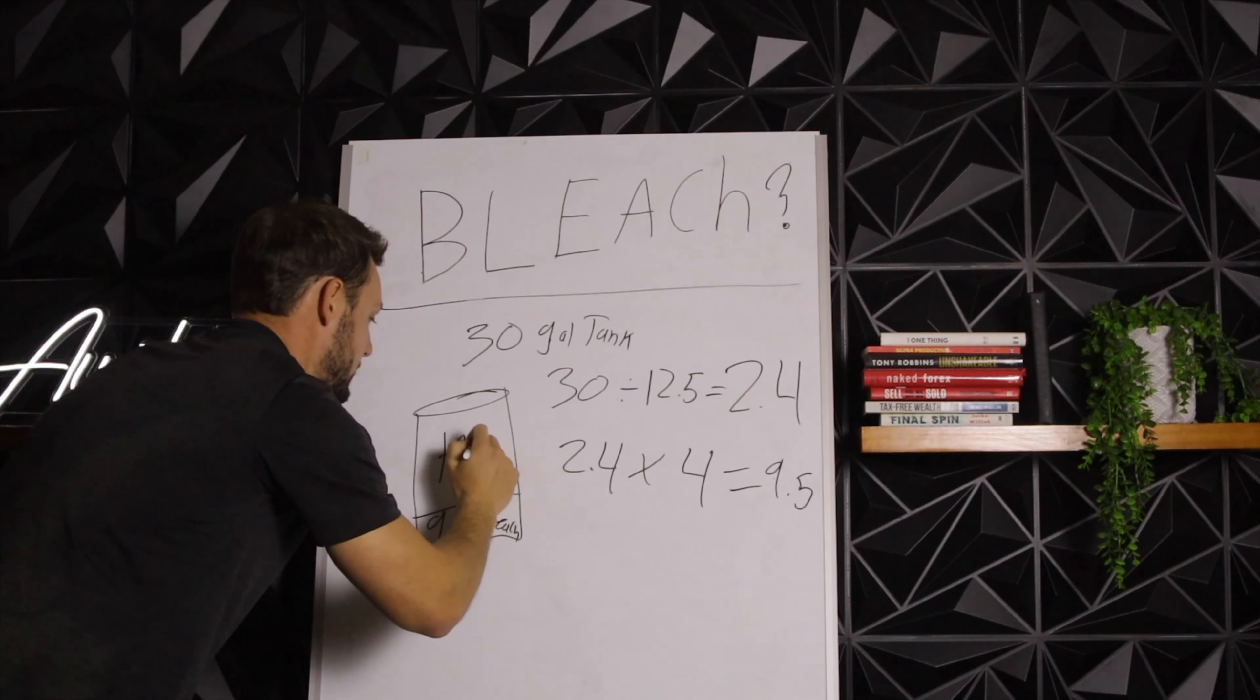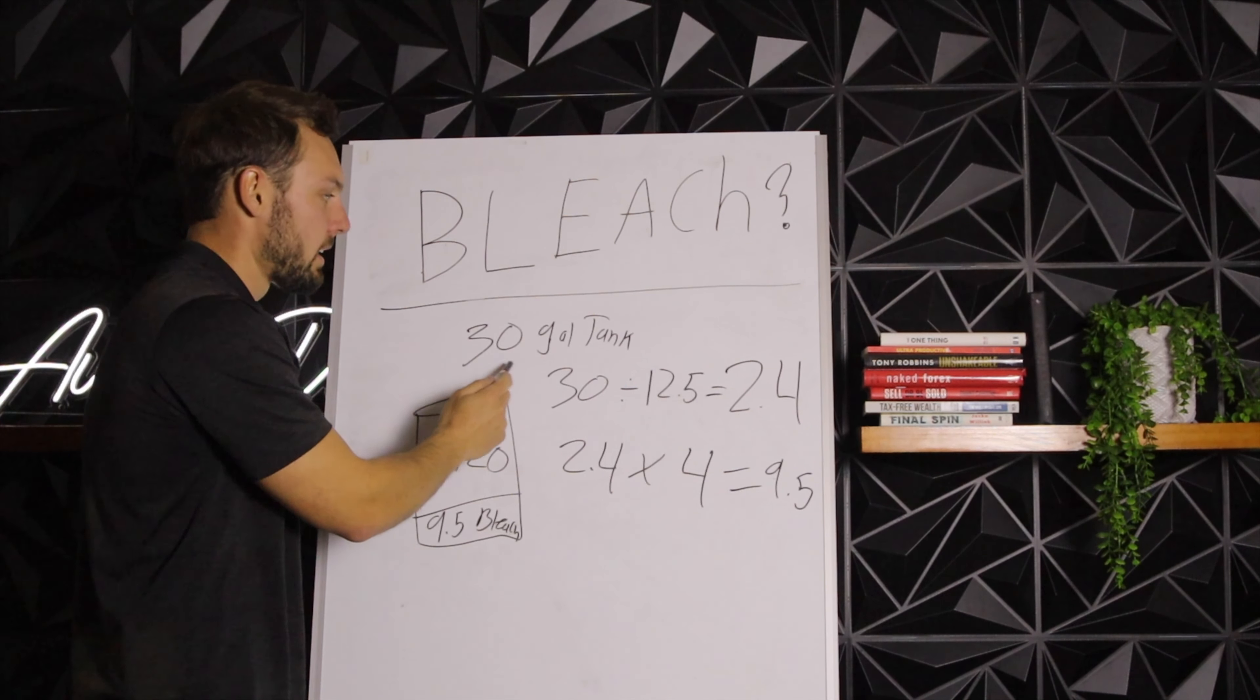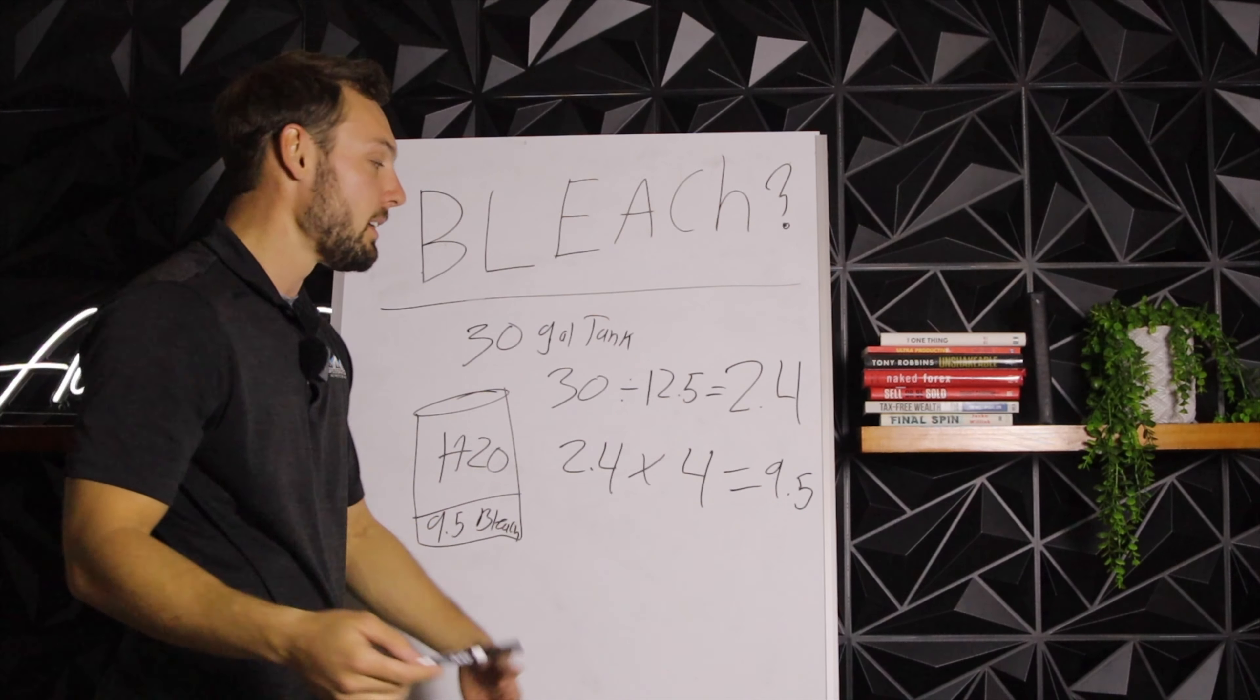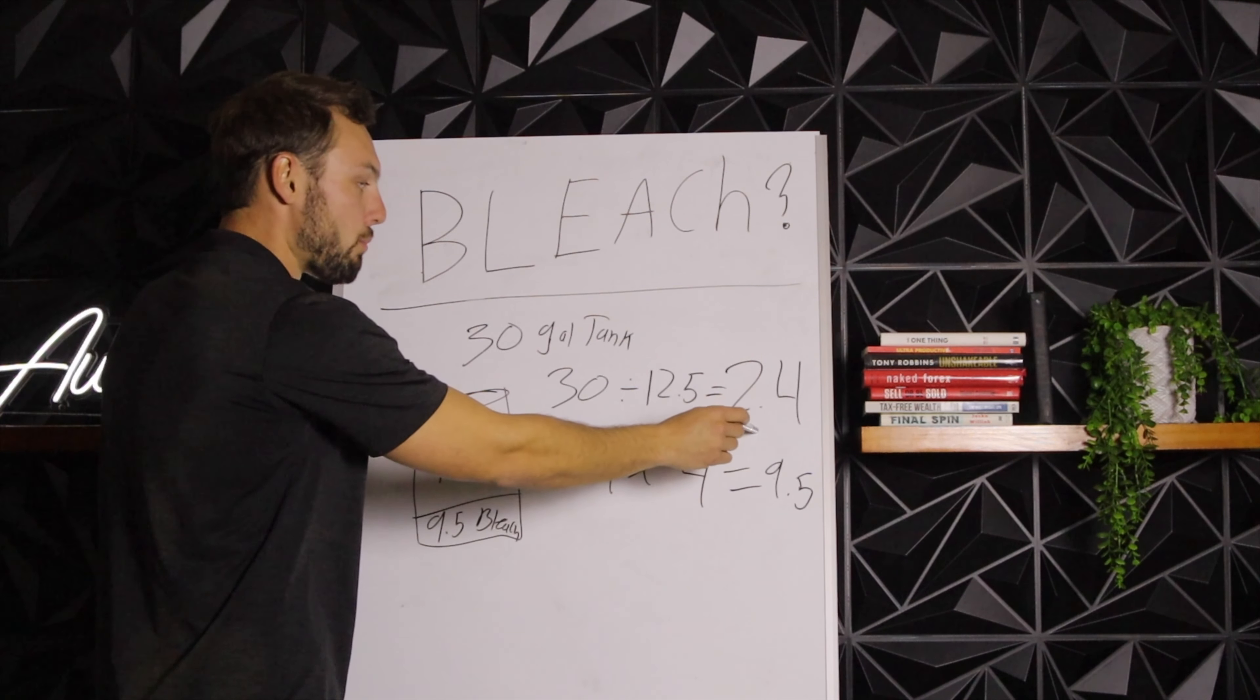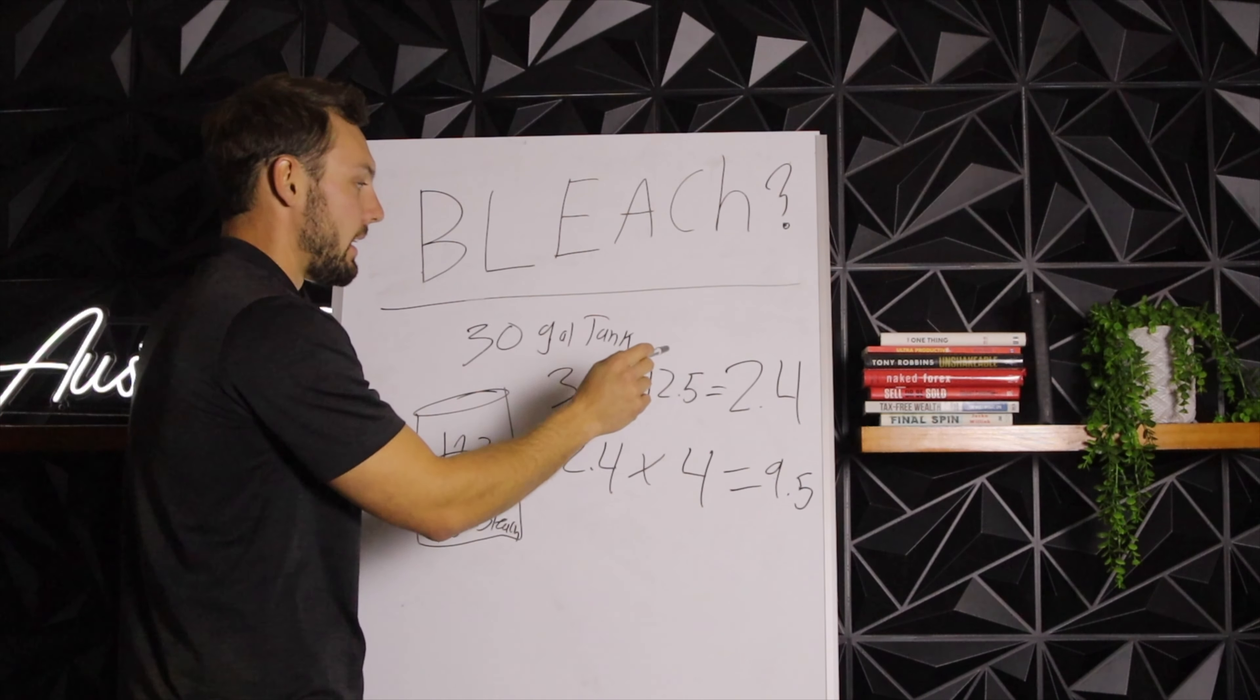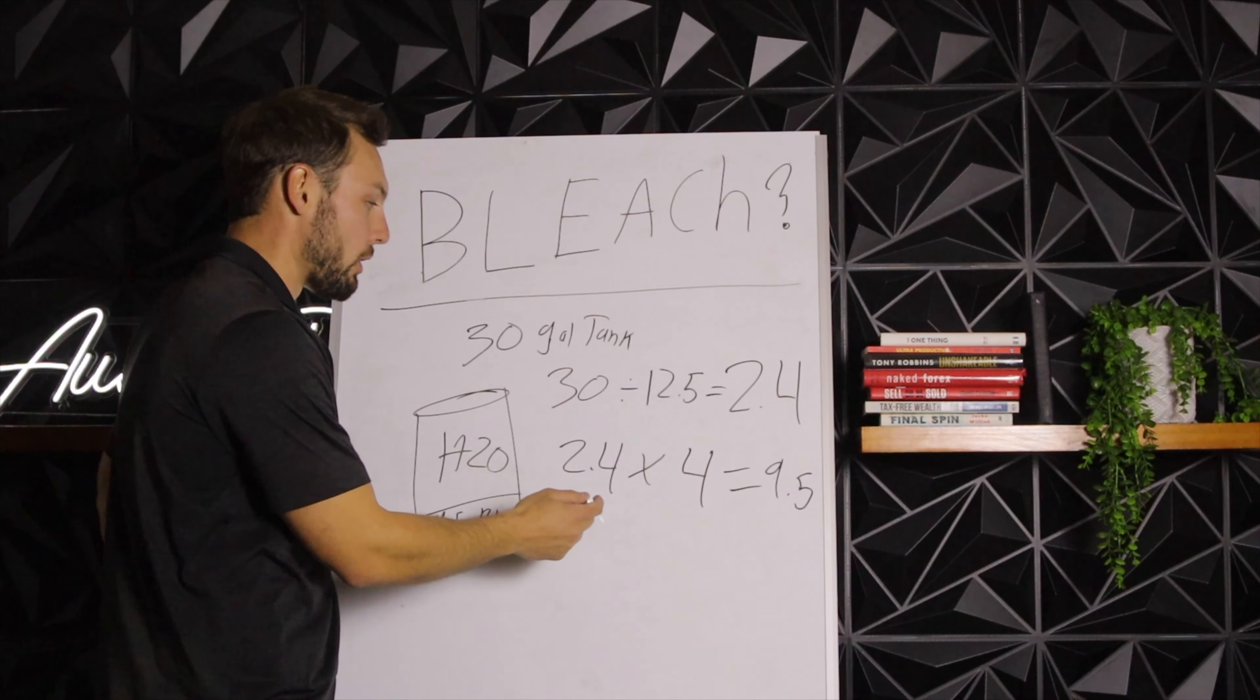You guys see how I did that? Take whatever batch mix tank you're using, in this case a 30 gallon tank, divide that by the strength at which we're buying bleach at. So this could be 12.5 in most cases, sometimes it's 10. Make sure you know exactly what strength you're buying it at. That's going to give us a factor of 2.4. If you're only using a 30 gallon tank, then 2.4 is always going to be your factor, so just memorize 2.4, write it down. Then you can just multiply 2.4 by whatever strength you're trying to achieve.